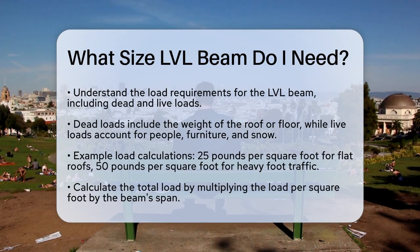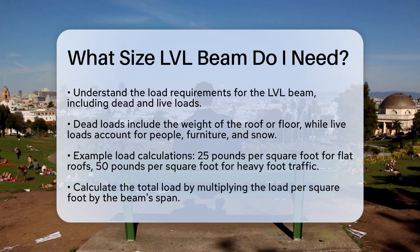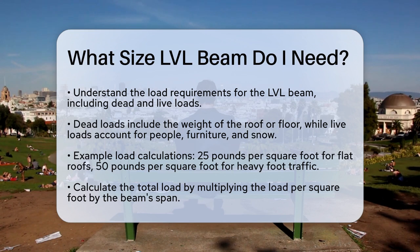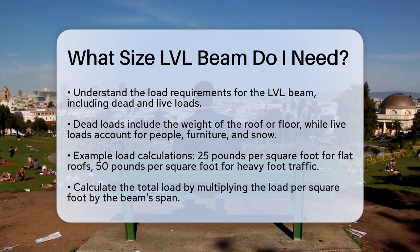First, you need to understand the load that the beam will have to support. This includes both dead loads, like the weight of the roof or floor itself, and live loads, such as people, furniture, and even snow if you're in an area that gets snowfall. For example, for a flat roof, you might use a load calculation of 25 pounds per square foot, while areas with heavy foot traffic could be 50 pounds per square foot.